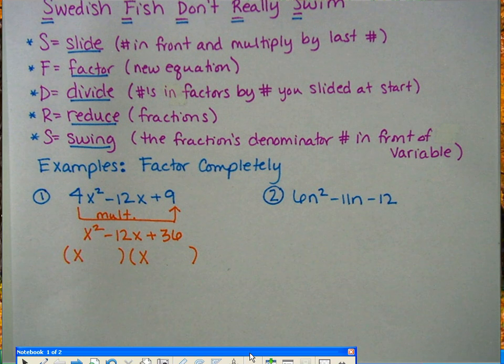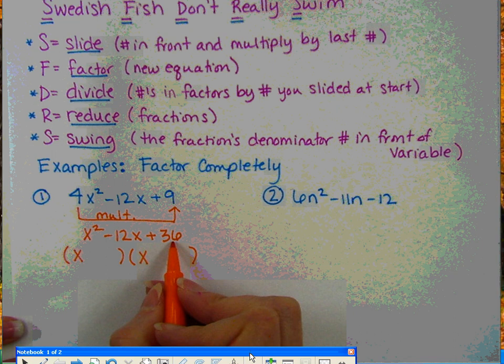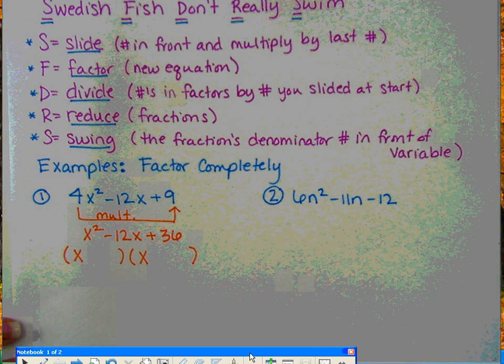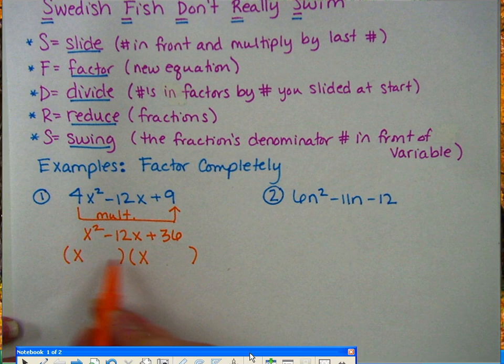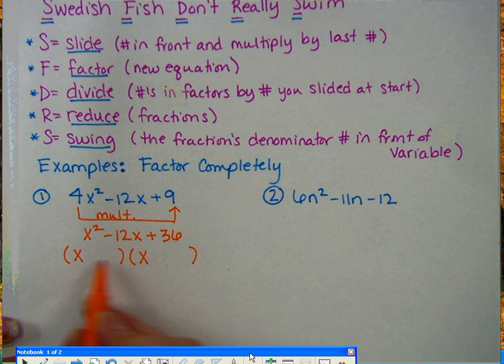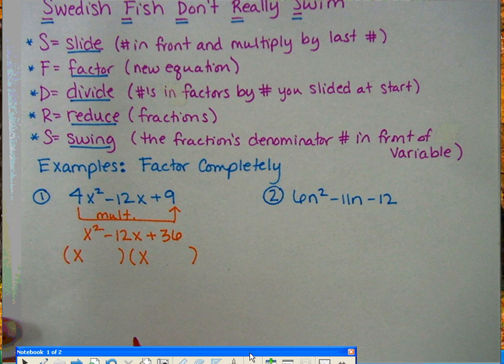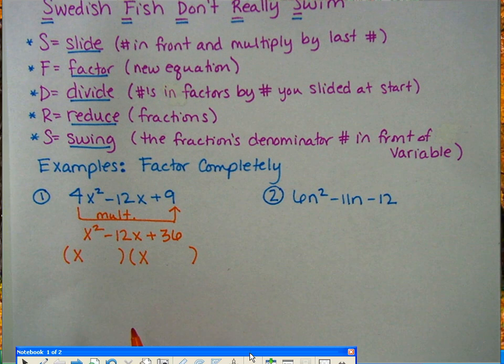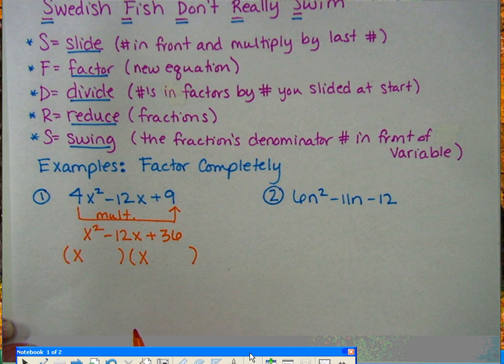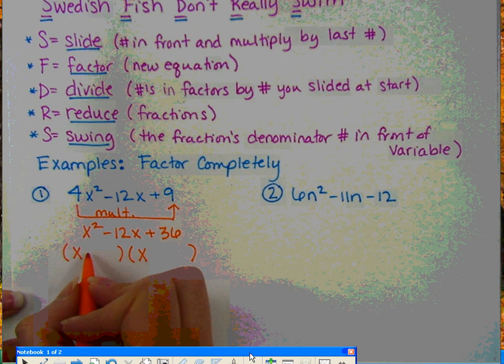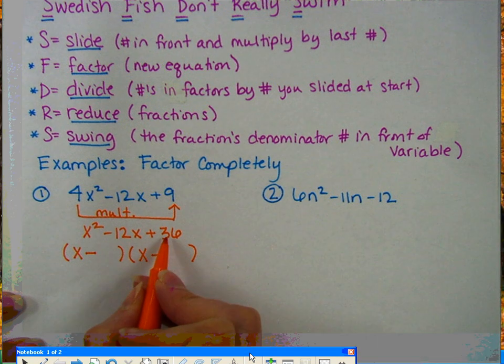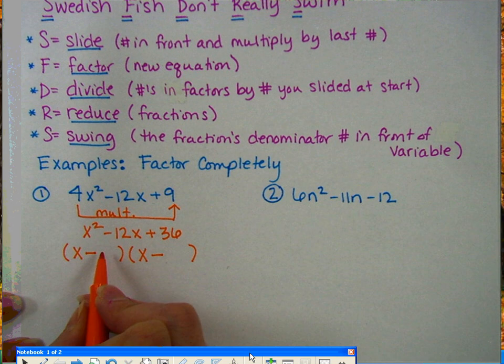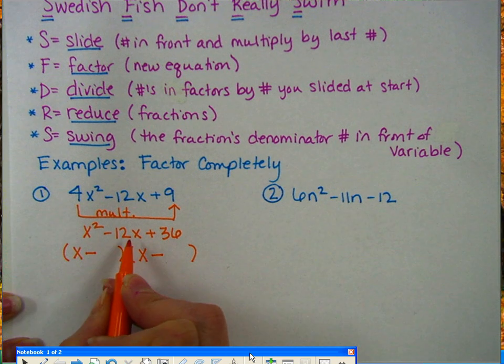So then you now have to figure out factors of 36 that are going to add up to a negative 12. So you have different sign options. You could either have both be plus here and here, both negative, or they could be opposite signs. So in this case, I know that my signs have to both be negative because a negative number times a negative number would give you a positive number here. And then the negative plus another negative number gives you a negative middle term.